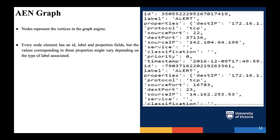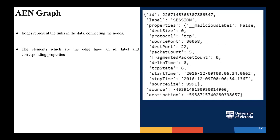The AEN graph has two main components: nodes and edges. Nodes represent the vertices in the graph engine, and every node element has an ID, label, and properties field. The values corresponding to these properties might vary depending on the type of label associated. The ID is unique to each node, the label here is alert, and properties include the protocol used (TCP), source port, destination port, source IP, and many other fields. Edges represent the links in the data and connect the nodes. Edge elements also have an ID, label, and corresponding properties — for example, the label can be a session, and properties can include malicious label, destination size, protocol, source port, destination port, and other information.